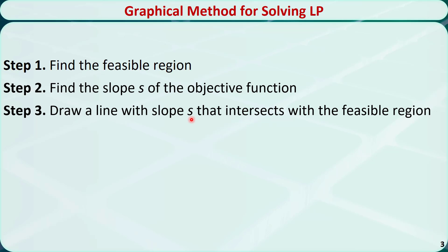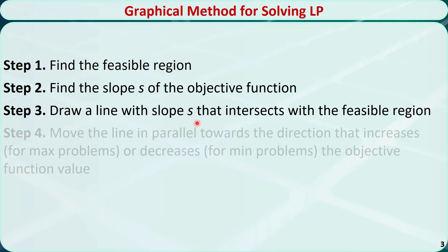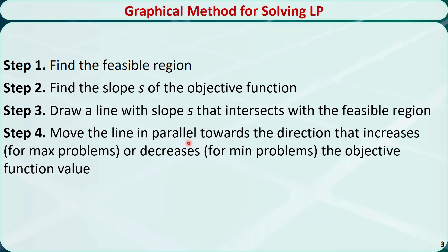Step 3: draw a line with slope s that intersects with the feasible region. Step 4: move the line in parallel towards the direction that increases the objective function for a maximization problem. If it is a minimization problem, we need to move the line towards the direction that decreases the objective function.